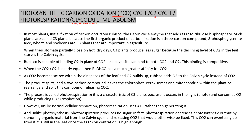In most plants, the initial fixation is done with the help of an enzyme called rubisco. Rubisco has affinity for both carbon dioxide and oxygen. What rubisco does is add carbon dioxide to RuBP, and in C3 plants generally, it makes the first organic compound of 3 carbons — 3-phosphoglyceric acid.